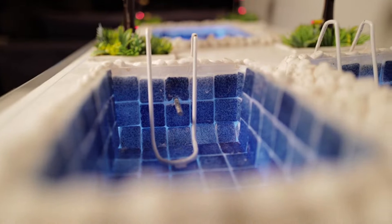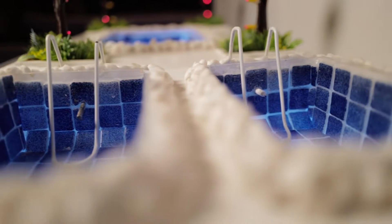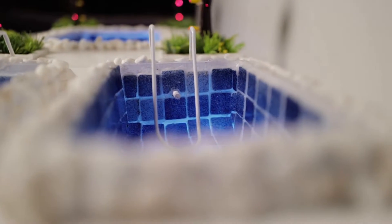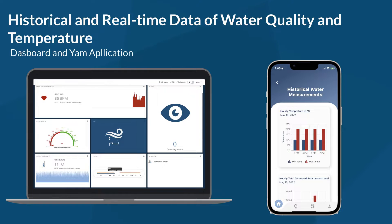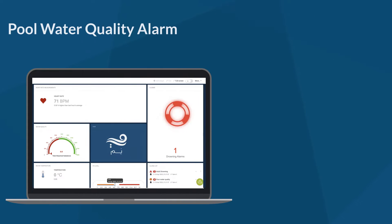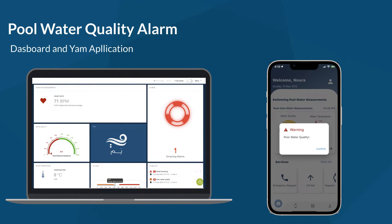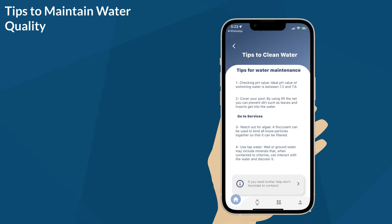YAM system includes sensors that measure the swimming pool's water quality and water temperature. Both admins and supervisors are able to view real-time and historical data of water quality and temperature. In case the TDS values went below or above the specified threshold, an alarm will be raised to both users. The supervisor can then follow the tips on how to keep the swimming pool's water clean provided in the YAM application.